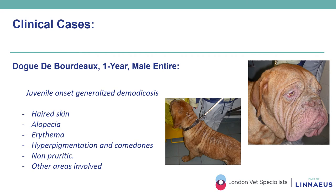This one-year-old entire male Dogue de Bordeaux was presented with a condition characterized by alopecia, erythema, hyperpigmentation and comedo formation affecting the haired skin, which was non-pruritic. At first presentation the lesions affected mostly the face; however, progressively other areas became involved including the dorsal neck and dorsal trunk. Breed predisposition, history and age at onset made the diagnosis of juvenile demodicosis highly likely, and this was further confirmed by examination of skin scrapings. Canine demodicosis is a parasitic condition caused by excessive multiplication in hair follicles and sebaceous glands of the host-specific mite Demodex canis.